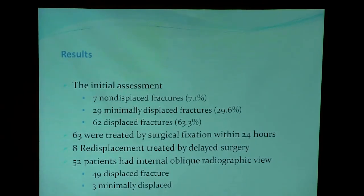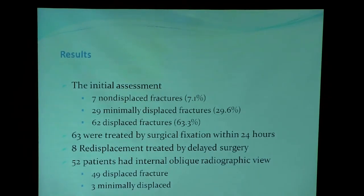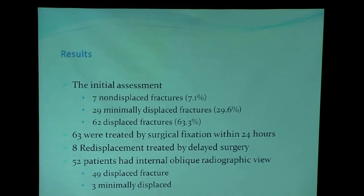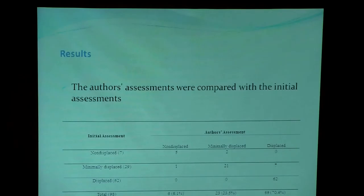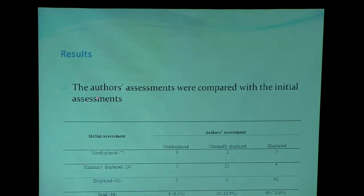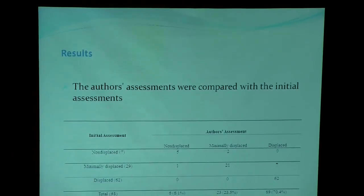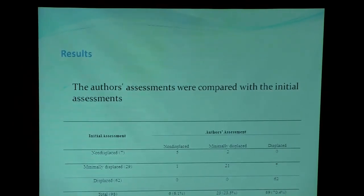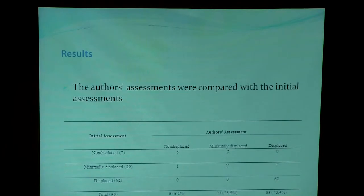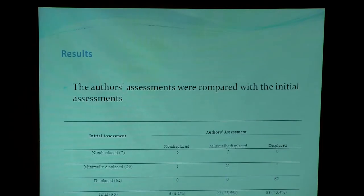63 of our patients were treated by primary internal fixation within 24 hours of injury, and 8 patients were found re-displaced — all from the 29 minimally displaced fracture group — and were treated by late surgery. 52 patients had an internal oblique radiographic view during initial assessment; 49 had displaced fractures and 3 had minimally displaced fractures. We found a significant association between the authors' retrospective assessment and the initial assessment, specifically in minimally displaced fractures, where 7 of the 29 minimally displaced were actually found to be displaced — misclassified at initial diagnosis.